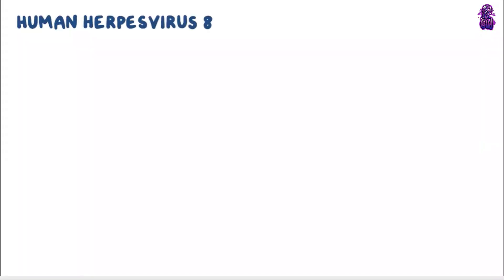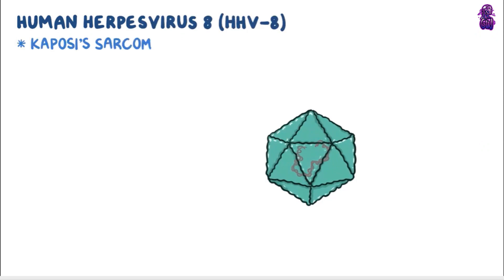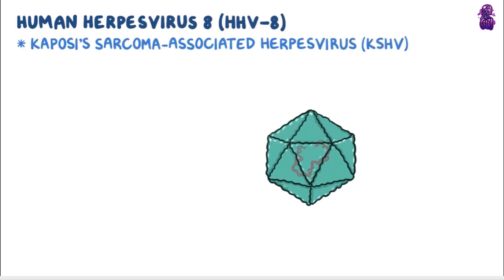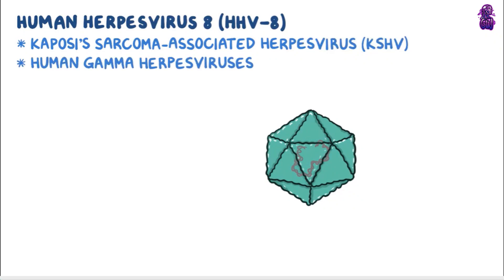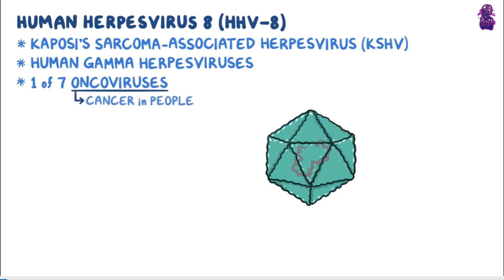Human herpesvirus 8, or HHV-8, also called Kaposi's sarcoma-associated herpesvirus, or KSHV, belongs to the family of human gamma herpesviruses. HHV-8 is one of the seven known oncoviruses, meaning viruses that cause cancer in people. Specifically, HHV-8 causes Kaposi's sarcoma, a type of cancer usually seen in individuals with AIDS.